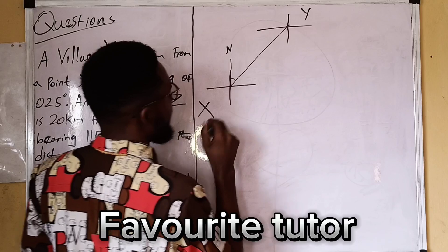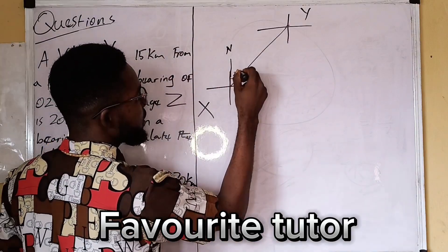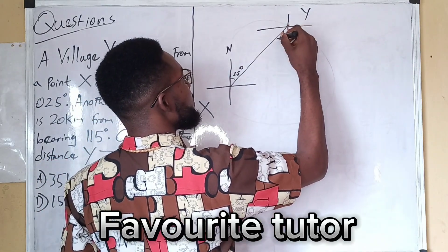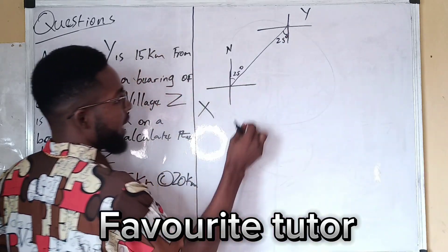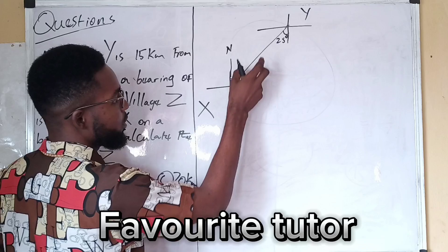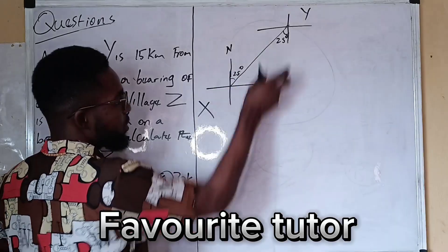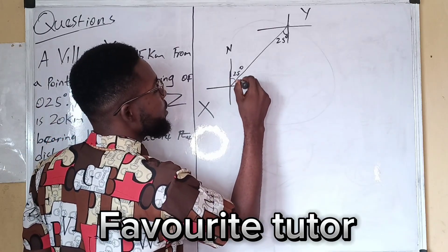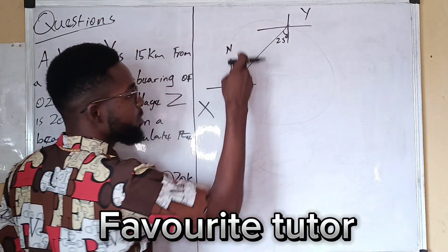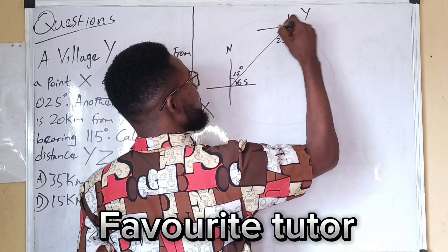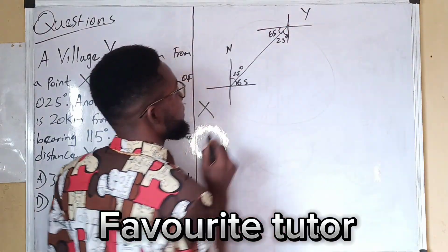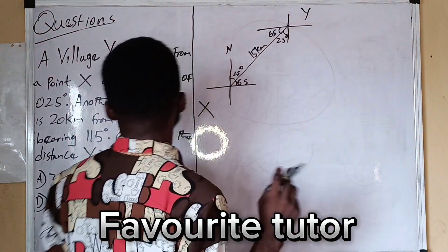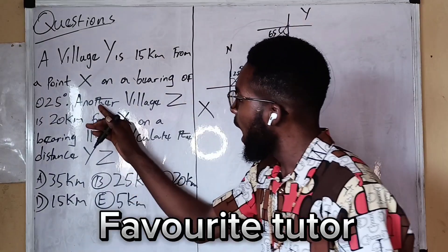Here is Y, and this is 25 degrees. So if here is 25, here will be 25 degrees — alternate angles. We have the quadrant: 90 degrees all together. So here is 25, and here will be 65 to make this quadrant 90. Alternate angles: here is 65 and the line is 15 kilometers.